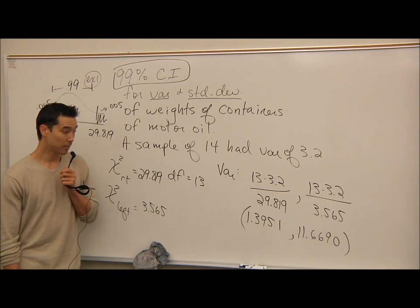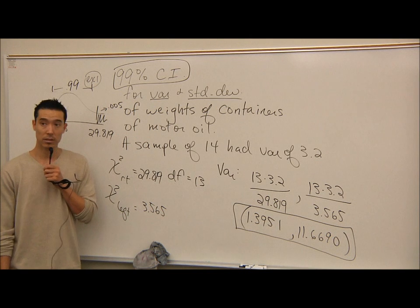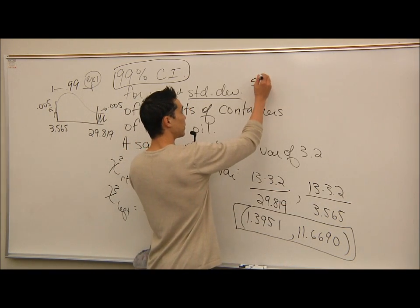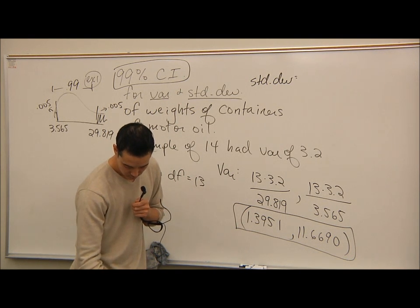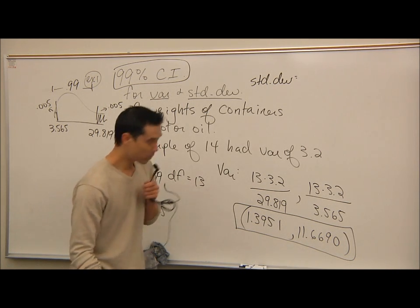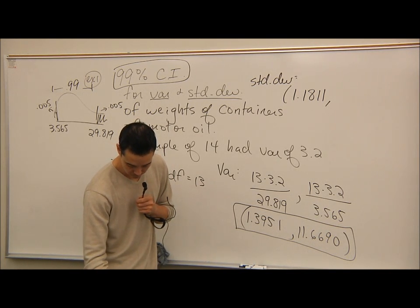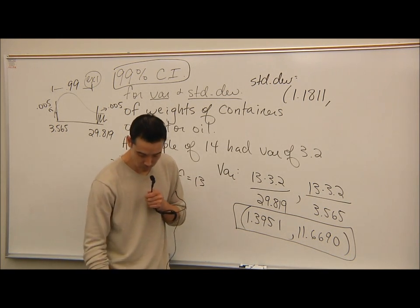That's the confidence interval for variance. To get the standard deviation confidence interval, simply take the square root of both bounds. Square root of 1.3951 ≈ 1.1811, and square root of 11.6690 ≈ 3.4160. So the 99% confidence interval for standard deviation is (1.1811, 3.4160).